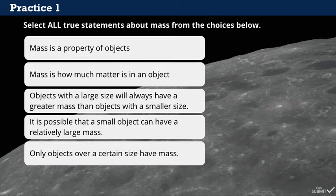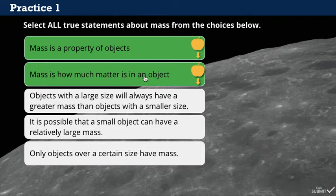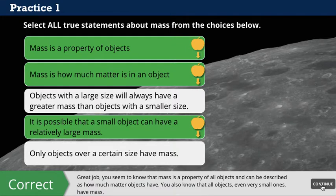Let's practice. For this question, select all true statements about mass from the choices below, then click Submit. Great job! You seem to know that mass is a property of all objects, and can be described as how much matter objects have. You also know that all objects, even very small ones, have mass.